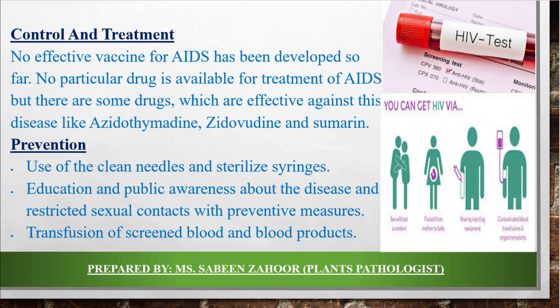There are some preventions. Use clean needles, sterilized syringes, and sterilized tools. If we go to a barber shop or hospital, we need to use clean needles, sterilized syringes, and sterilized tools. At a barbershop or saloon, they should also use sterilized scissors and blades. Education and public awareness about the disease and restricted sexual contacts with preventive measures are important. Most importantly, before giving blood to anyone, transfusion of screened blood and blood products is essential.